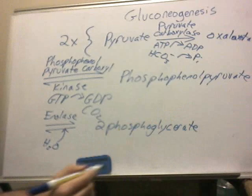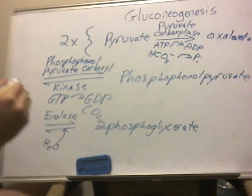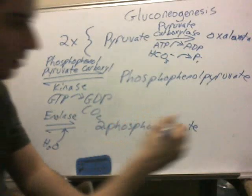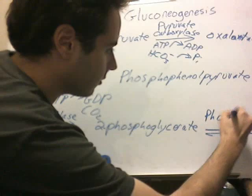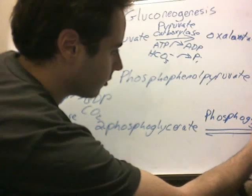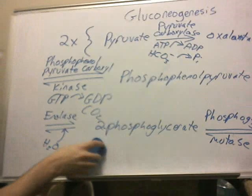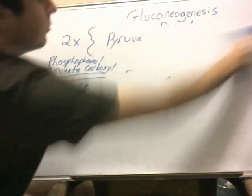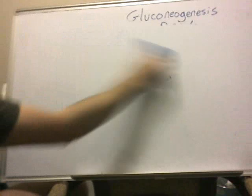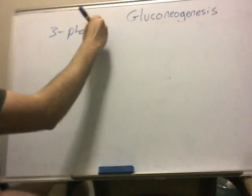If you remember last time, we used a mutase to move the phosphate group from carbon 3 to carbon 2. This time, we're going to use phosphoglycerate mutase to move it back from carbon 2 to carbon 3. Just like before, the mutase is going to move the phosphate group to the next carbon, so we have 3-phosphoglycerate.